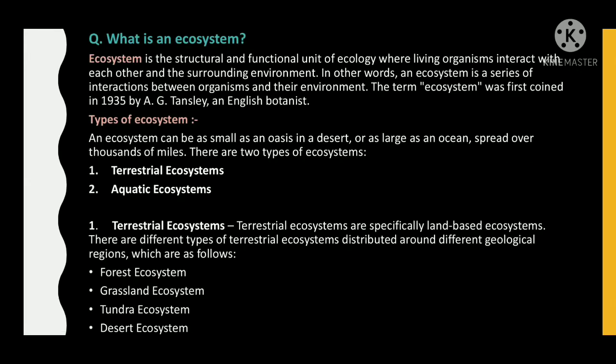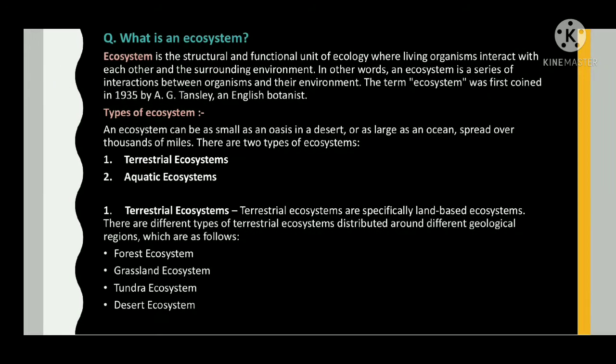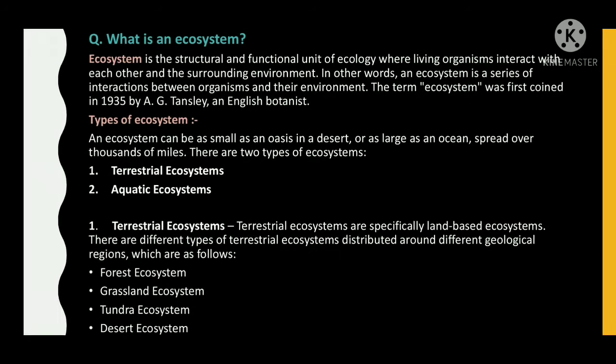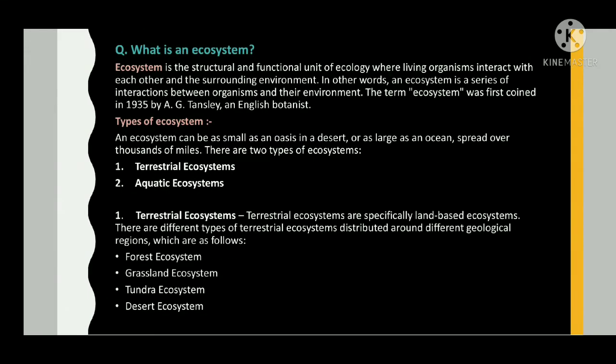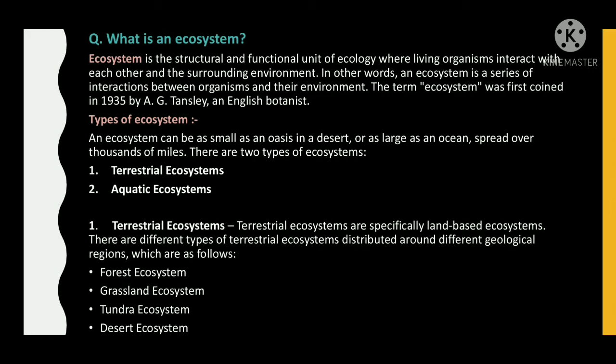What is an ecosystem? Ecosystem is the structural and functional unit of ecology where living organisms interact with each other and the surrounding environment. An ecosystem is a series of interactions between organisms and their environment. The term ecosystem was first coined in 1935 by A.G. Tansley, an English botanist.